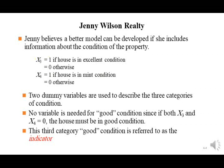Whenever I have a categorical or qualitative variable and want to represent it in a multiple regression model, I look at the categories and define a number of dummy or binary variables equal to the number of categories minus one. For example, with three categories, we keep one — good condition — as the indicator, and define x3 equal to one if the house is in excellent condition and zero otherwise, and x4 equal to one if the house is in mint condition and zero otherwise.